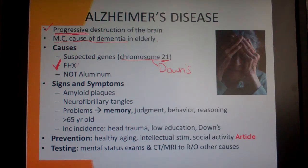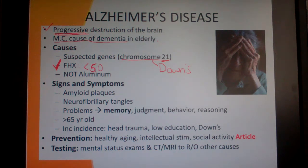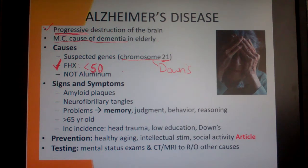There is a family history component in some cases of Alzheimer's. When Alzheimer's runs in the family — mother or father having had it — you're usually talking about cases in people under 50 years old. If someone doesn't get it until 70 years old, that's probably less about family history and more about other genetic or environmental factors.